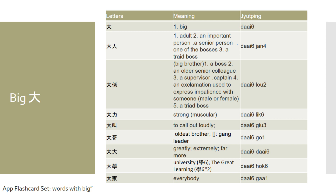If you say daai loo, it means you want to call out loudly. Remember daai loo refers to your big brother. Another way to say your oldest brother is daai goo. This can also refer to a gang leader, but it's less commonly used than daai loo. Daai loo is more commonly used and usually less formal than daai goo.